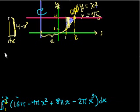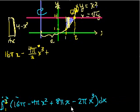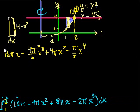And we're ready to take the antiderivative. So what's the antiderivative of this? So the antiderivative of 16 pi is 16 pi x. And then what's the antiderivative of 4 pi x squared? It's going to be x to the third over 3. So it'll be minus 4 pi over 3 x to the third. And then we have plus, well this will be x squared over 2, so it'll be plus 4 pi x squared. And then minus, this will be x to the fourth over 4, so minus pi over 2 x to the fourth.